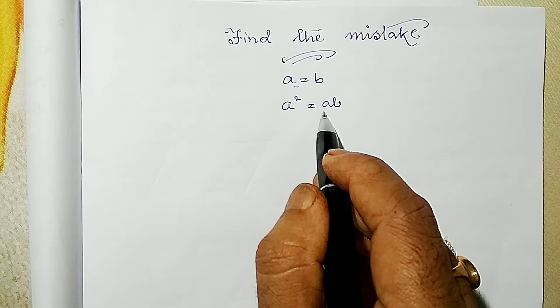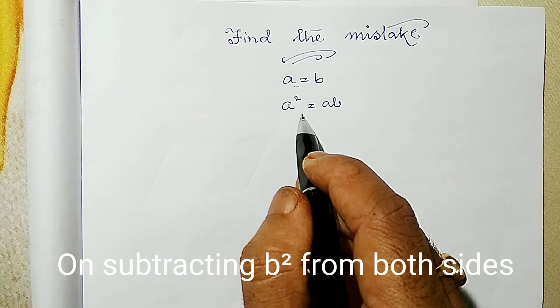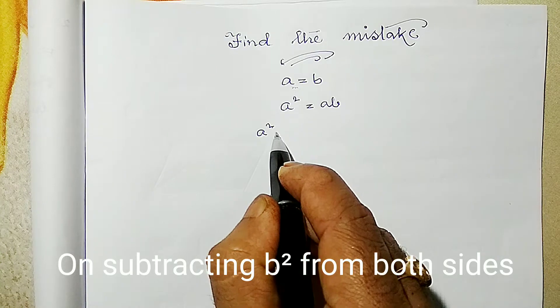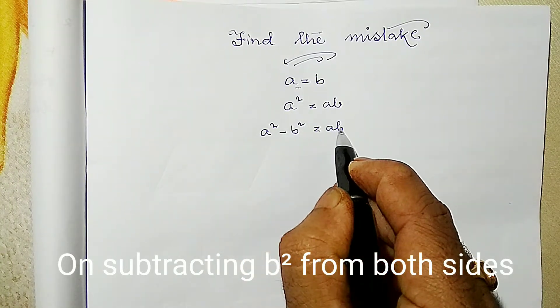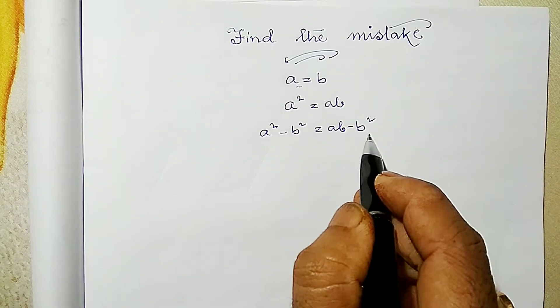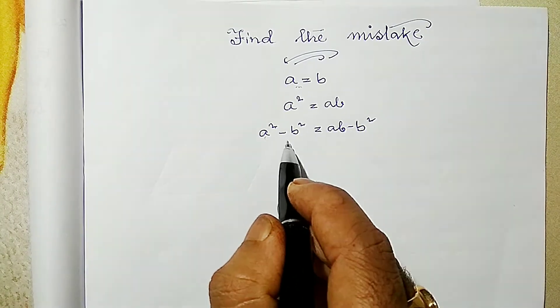Now if I subtract b square from both, I am going to get a square minus b square equals to ab minus b square. That I can do. Now we know the formula a square minus b square is a plus b into a minus b.